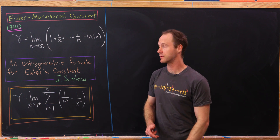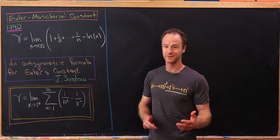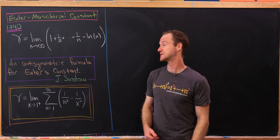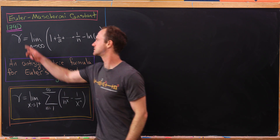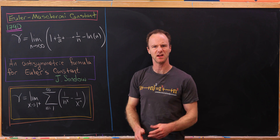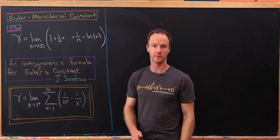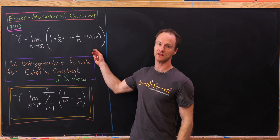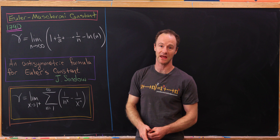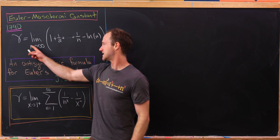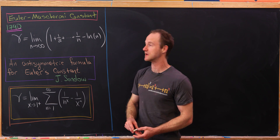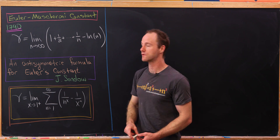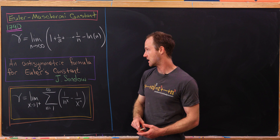Today I've got a video about the Euler-Mascheroni constant. This is one of the other constants related to the famous mathematician Euler, and it comes from 1790, which oddly enough is also my birth year. This thing is generally defined as the following limit. Gamma is equal to the limit as n goes to infinity of 1 plus 1/2 plus 1/3 all the way up to 1/n, minus the natural log of n.